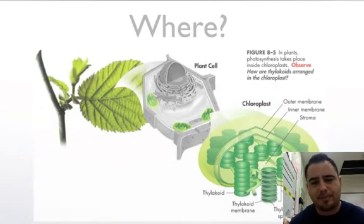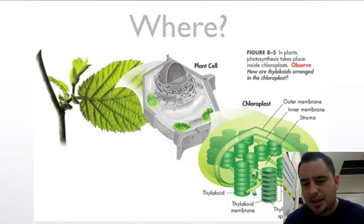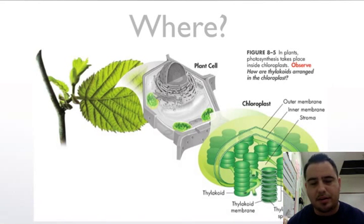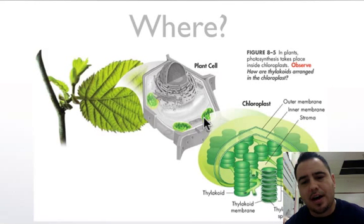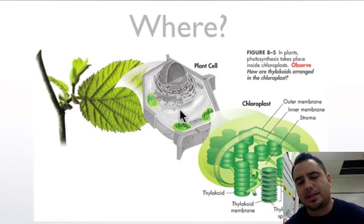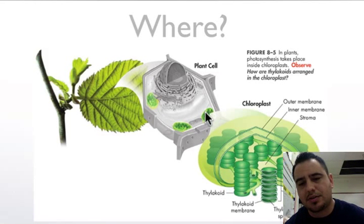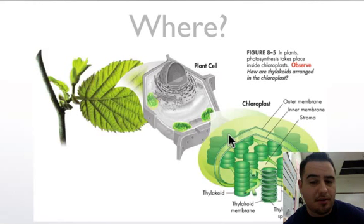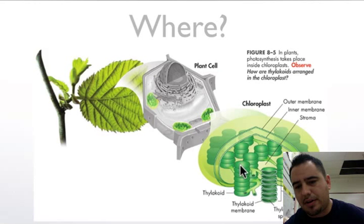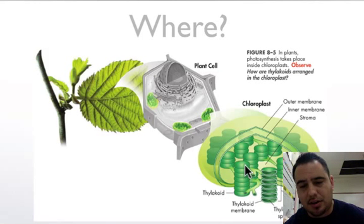So where does photosynthesis happen? It happens in any part of the plant that's green — for example, a leaf or the stem. Inside the leaves are important structures in plant cells called chloroplasts. Zooming into the chloroplast, you have an outer membrane and an inner membrane, and important areas called thylakoids.